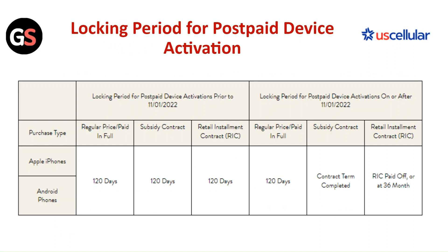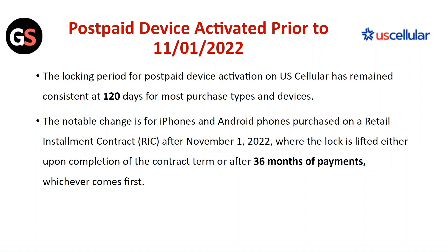Locking period for postpaid device activation: For postpaid devices activated prior to November 1, 2022, the locking period has remained consistent at 120 days for most purchase types and devices. The notable change is for iPhones and Android phones purchased on a retail installment contract after November 1, 2022, where the lock is lifted either upon completion of the contract terms or after 36 months of payments, whichever comes first.